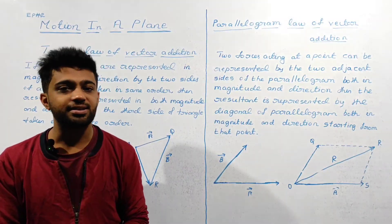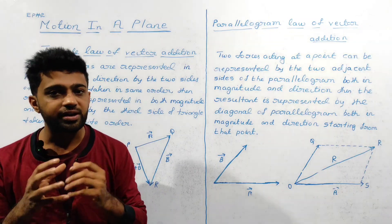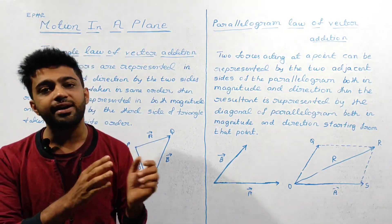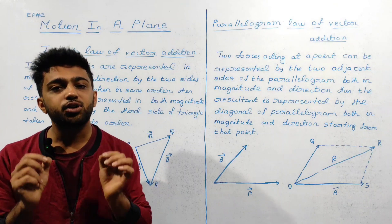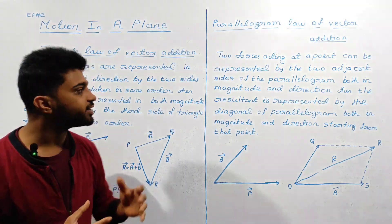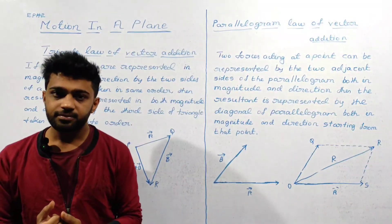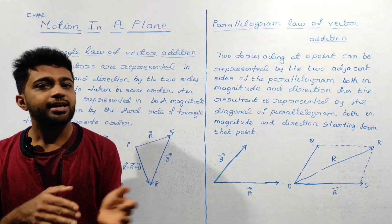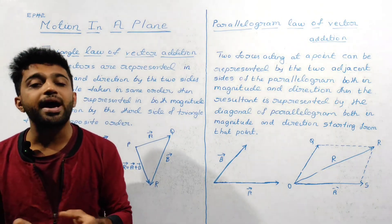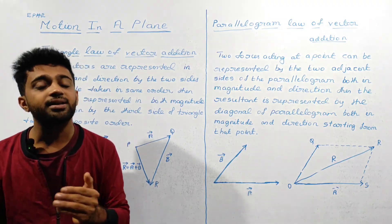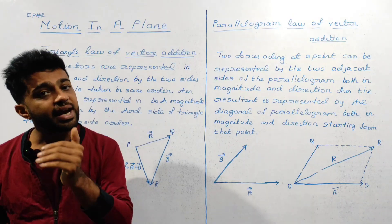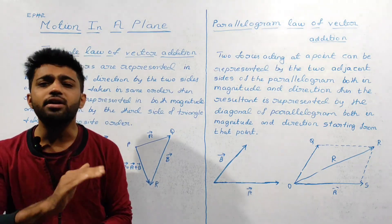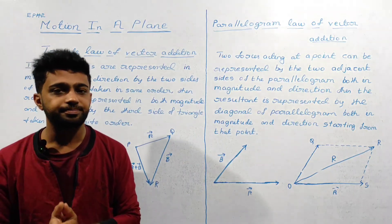We study the Triangle Law of Vector Addition. If two vectors are represented both in magnitude and direction by the two sides of a triangle, then the resultant of those vectors can be given in both magnitude and direction by the third side of the triangle, taken in the opposite or reverse order.